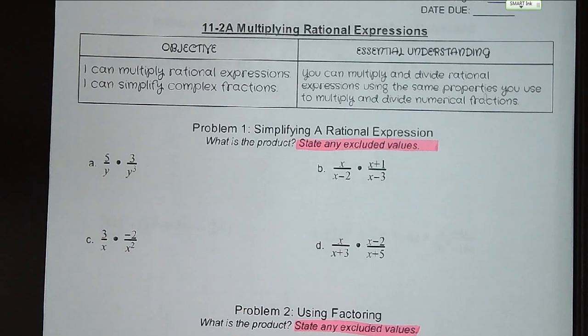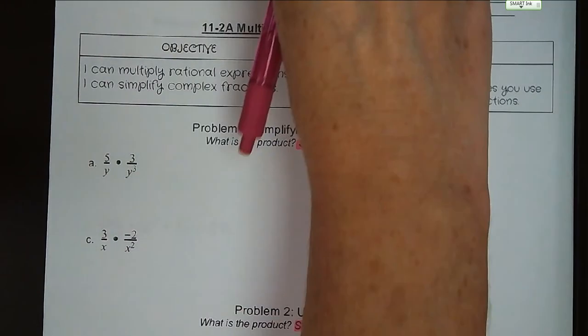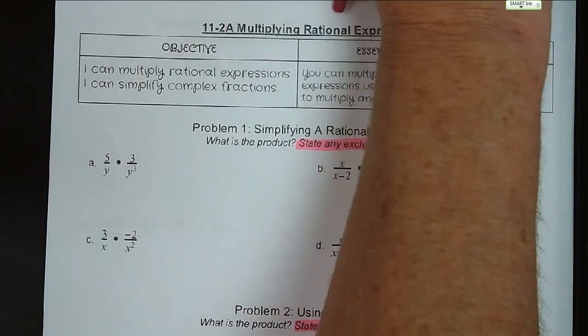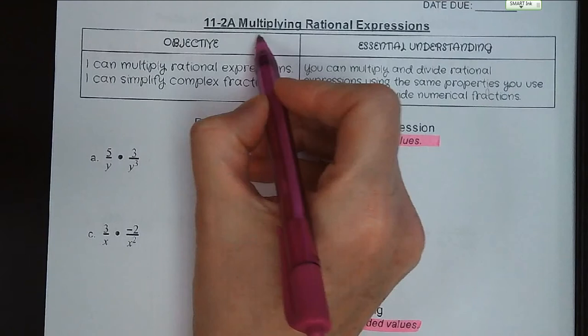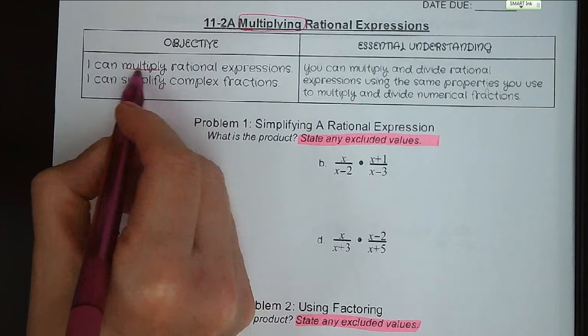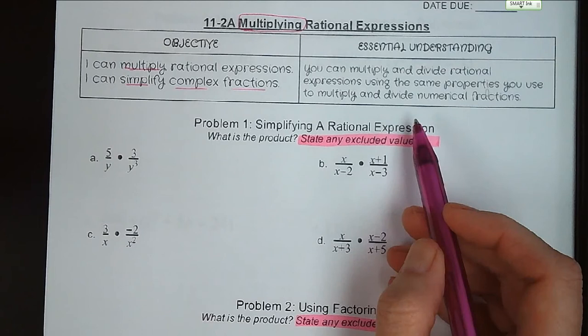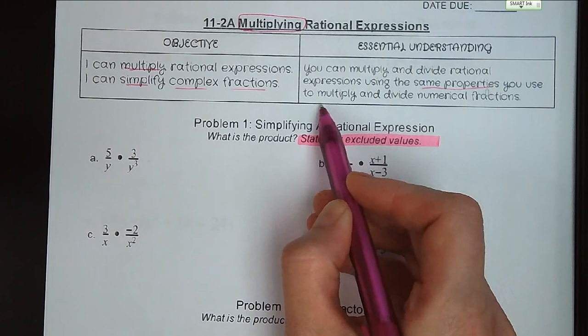Hi guys, welcome to lesson 11.2a, Multiplying Rational Expressions. Our objective for today is that I can multiply rational expressions and that I can simplify complex fractions. Our essential understanding: you can multiply and divide rational expressions using the same properties that you would use to multiply and divide numerical fractions.